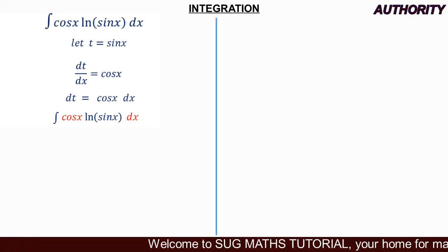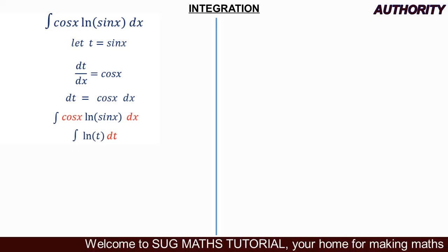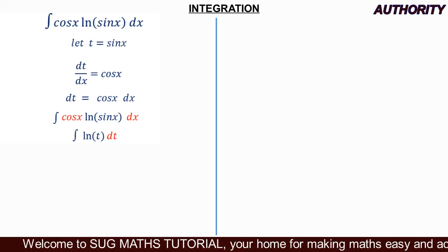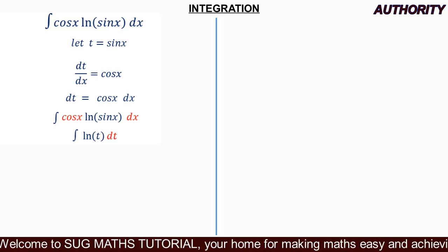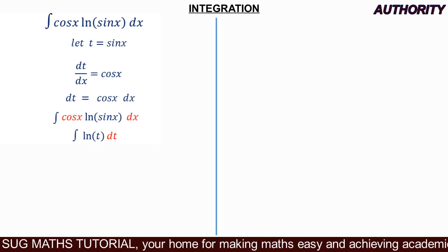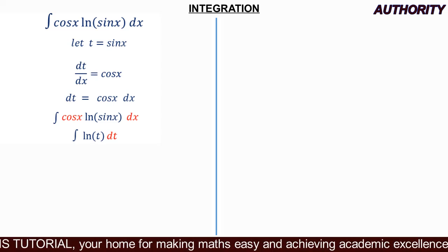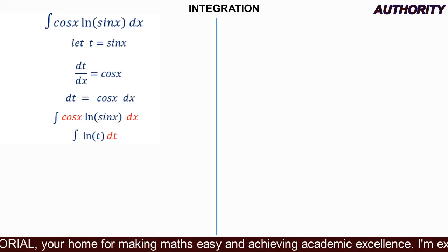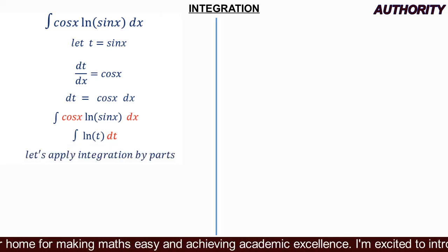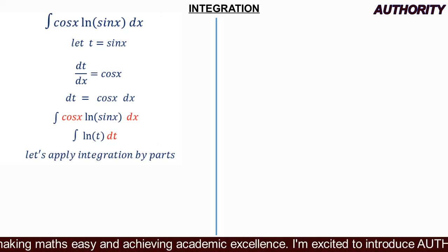After substitution, we have the integral of ln(t)dt — a much simpler expression. The complex-looking problem has been reduced to this, and we will solve it using integration by parts.